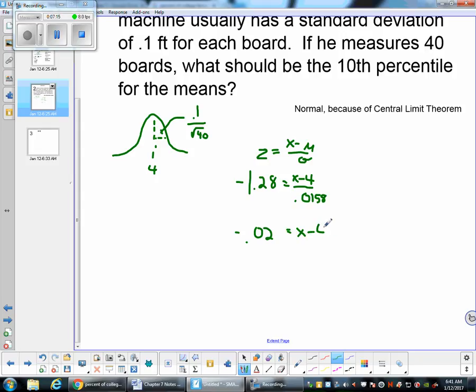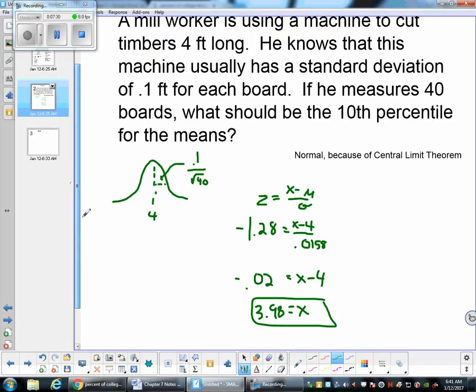If I add 4 to both sides, my x is going to get 3.98. So my 10th percentile will be 3.98. So any variation from that and we know it's off.